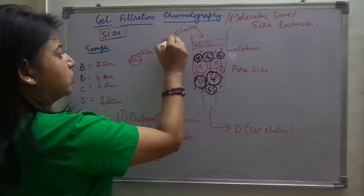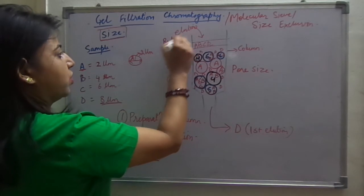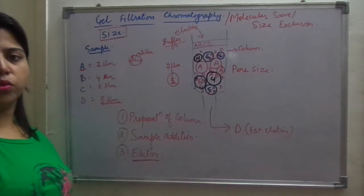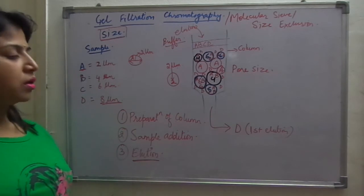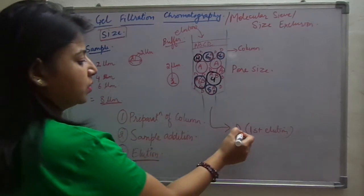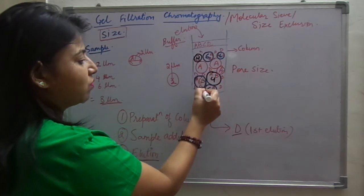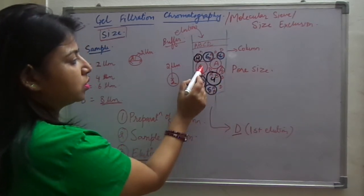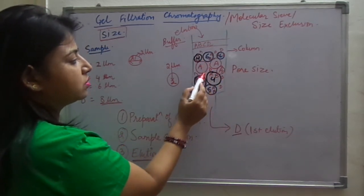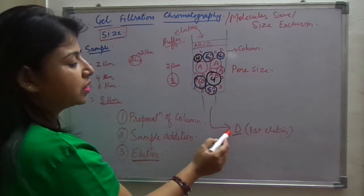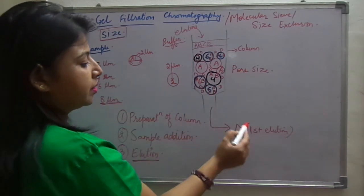You add a buffer to this solution. What is the function of buffer? The buffer pushes out the sample components further apart. In the first step, this D which has not crossed any beads will have to travel the least amount of space. It will travel through the intercellular spaces or interbeadal spaces in this column and come out first.